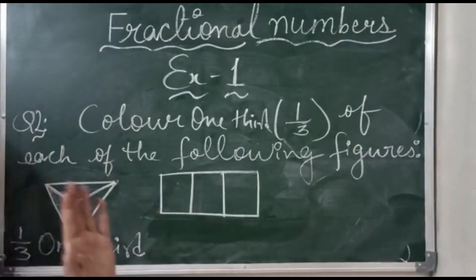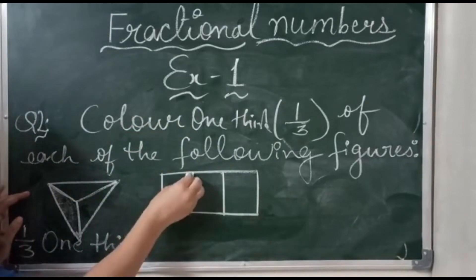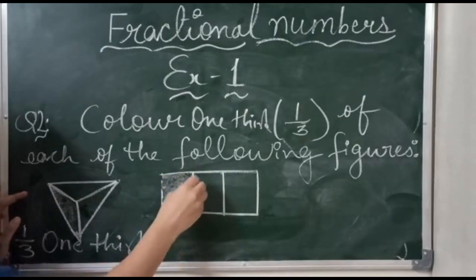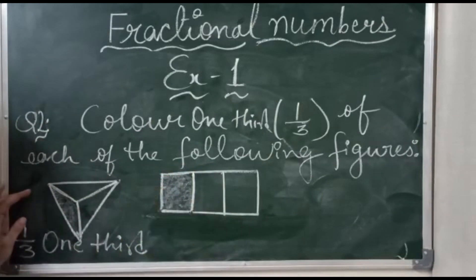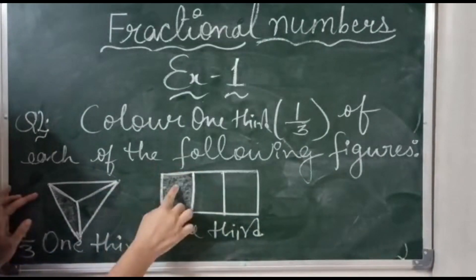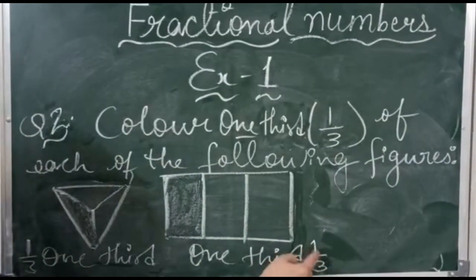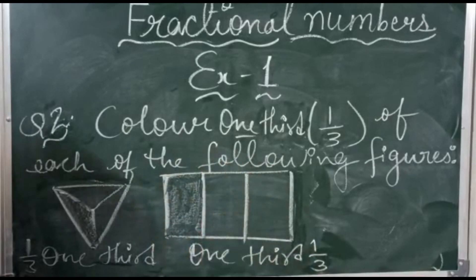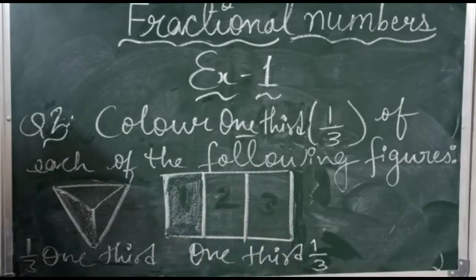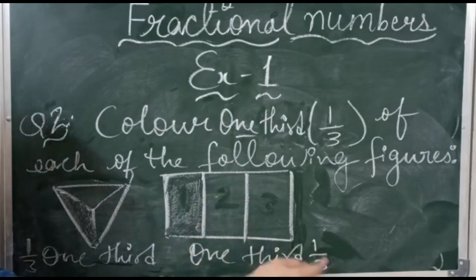The second figure is a rectangle. In this rectangle we follow the same rules — color one third, so one portion we have to fill. I am filling the first part of this figure. How to write it? One third — because one portion I have filled and there are three partitions. Here I am writing one by three. One is the whole part, and three is the total number of parts. Number of parts we write in the Denominator, and one we write on the Numerator because it is the whole.